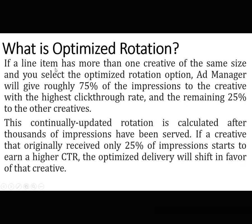What is optimized rotation? If a line item has more than one creative of the same size and you select the optimized rotation option, Ad Manager will give roughly 75% of the impressions to the creative with the highest click-through rate and the remaining 25% to the other creatives. This continually updated rotation is calculated after thousands of impressions have been served.